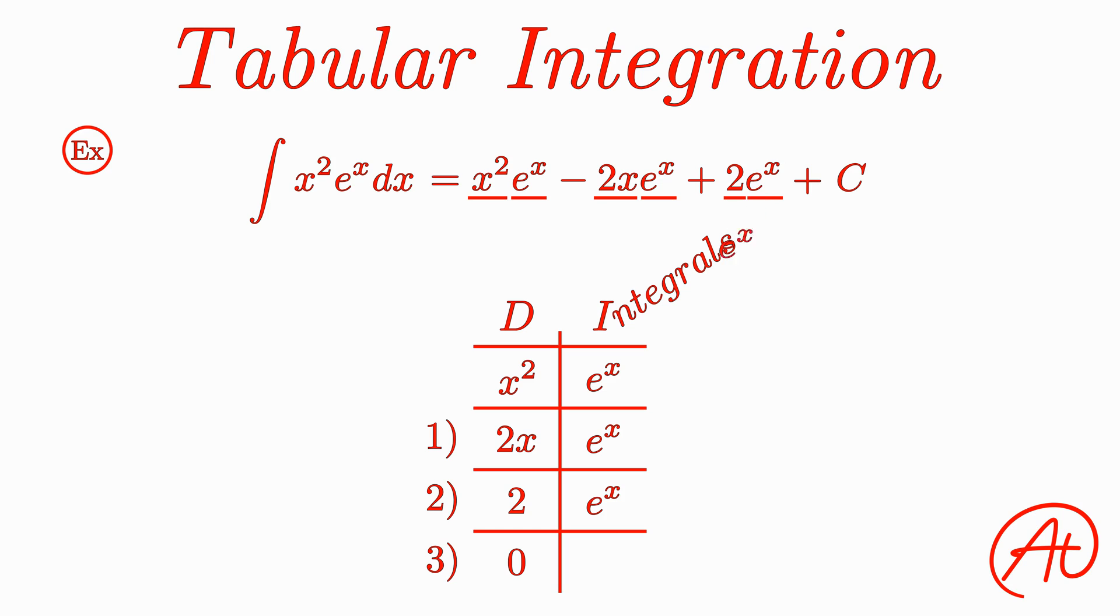Okay, so looking at this table, it looks like we can generate each term in our answer simply by multiplying diagonally down the rows like this. But we are missing one small thing. If you look at the sign in front of each of our terms in our answer, you can see that there is this alternating negative sign pattern that appears throughout the expression. So we have to account for that by alternating between positive and negative signs for each of our terms that come from the table.